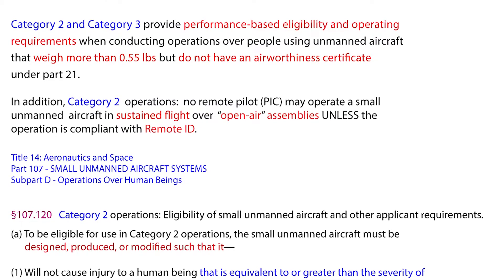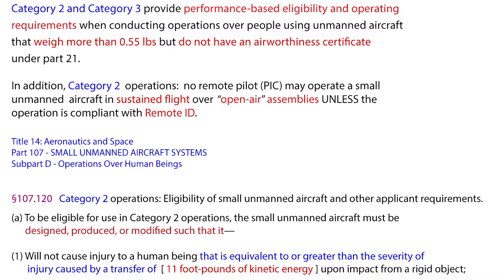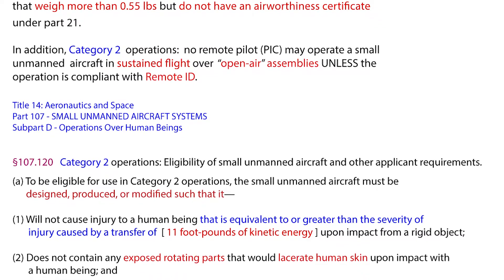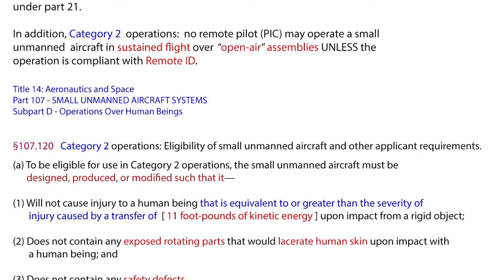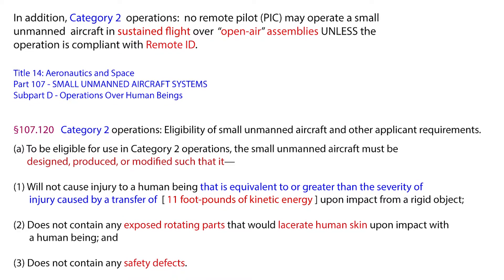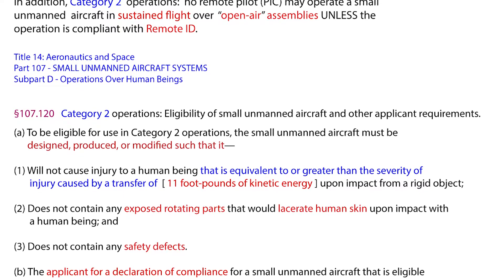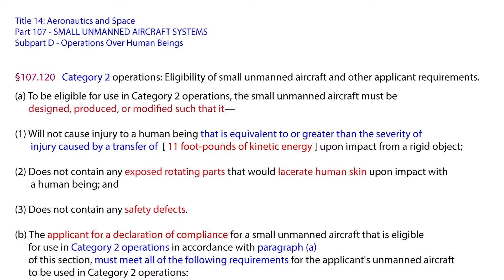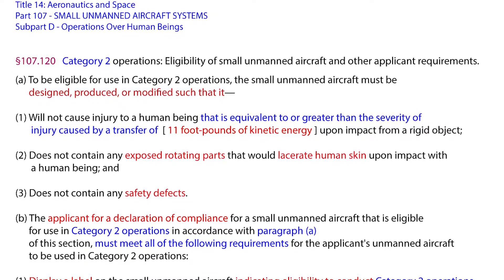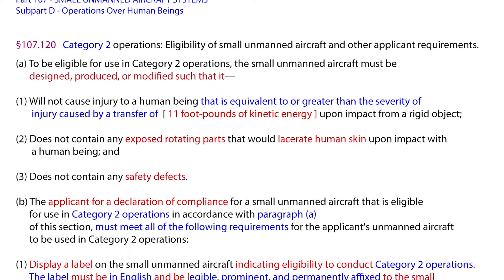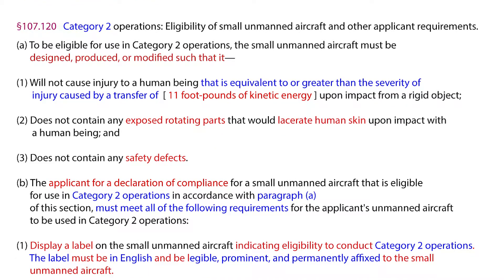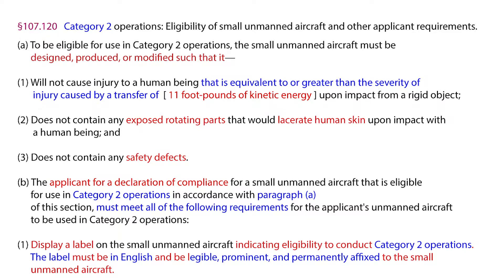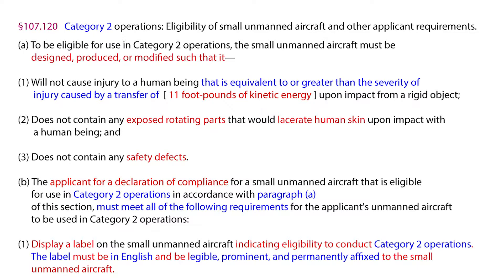In Title 14 Aeronautics and Space, Part 107, Subpart D, operations over human beings — for Category 2 operations, eligibility of small unmanned aircraft: to be eligible for use in Category 2 operations, a small unmanned aircraft must be designed, produced, or modified such that it will not cause injury to a human being equivalent to or greater than the severity of injury caused by a transfer of 11 foot-pounds of kinetic energy upon impact from a rigid object, does not contain any exposed rotating parts that would lacerate human skin upon impact, and does not contain any safety defects. The applicant for a declaration of compliance must meet all requirements for the unmanned aircraft to be used in Category 2 operations.